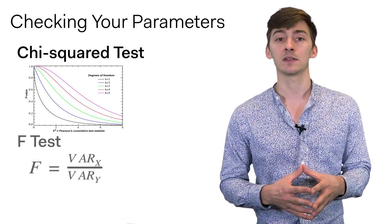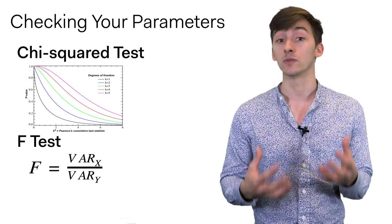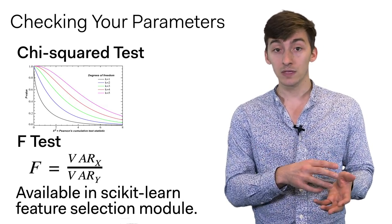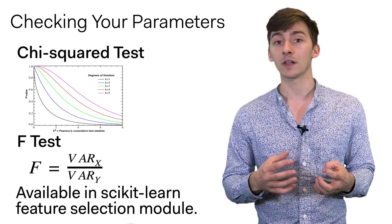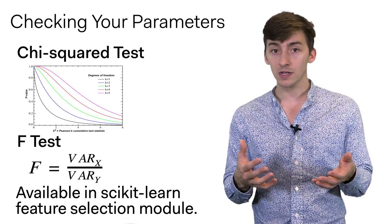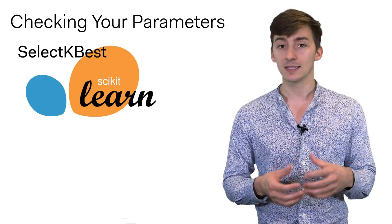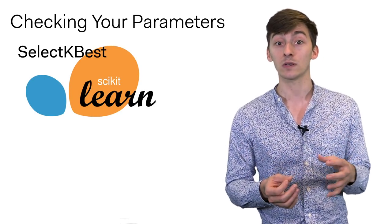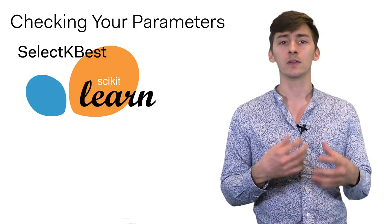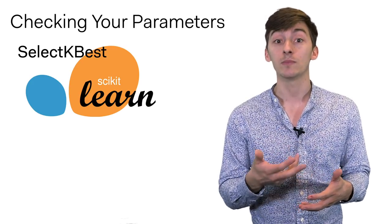We can also use an F-test to determine if any individual features are useful or not. Both of these metrics, as well as a number of others, are available in the scikit-learn feature selection module, and you can use them in conjunction with the function SelectKBest, which chooses the k best features according to whatever metric you feed in, and you can use those in your eventual model.